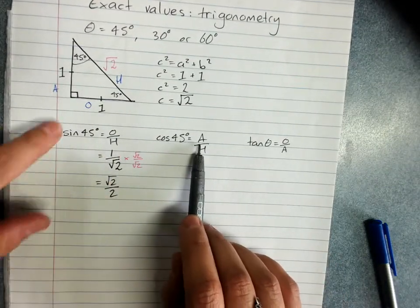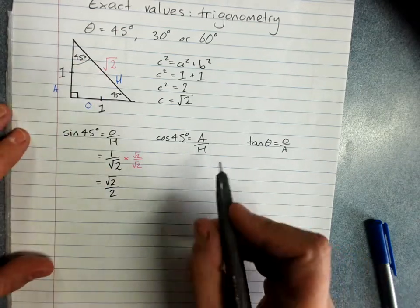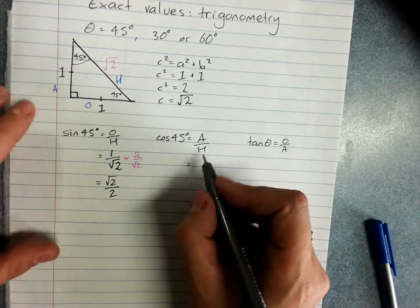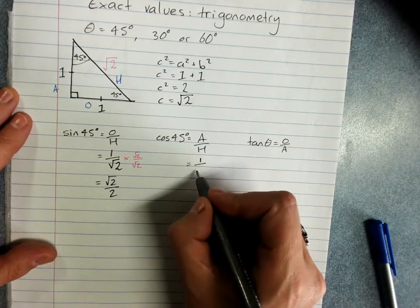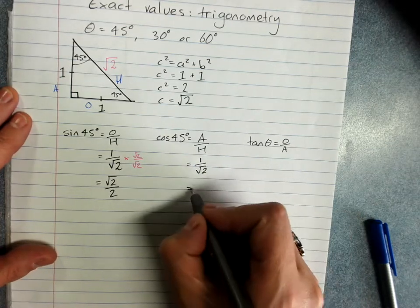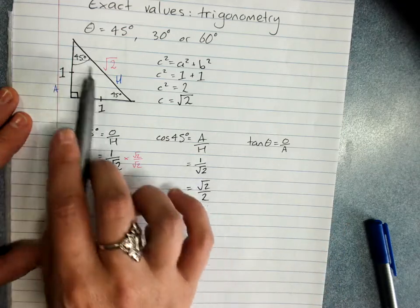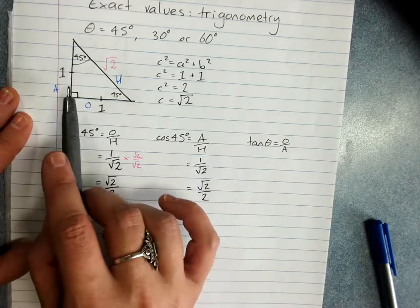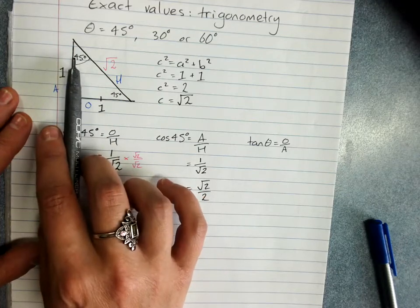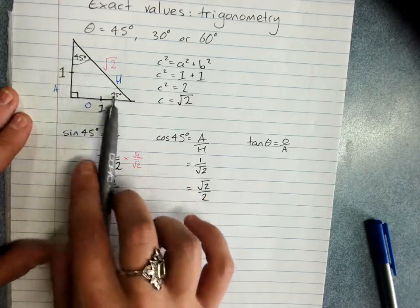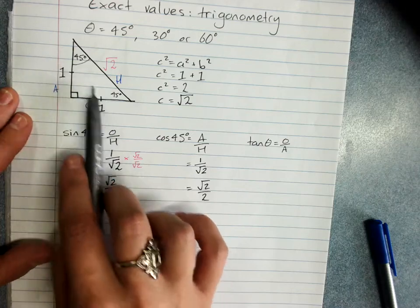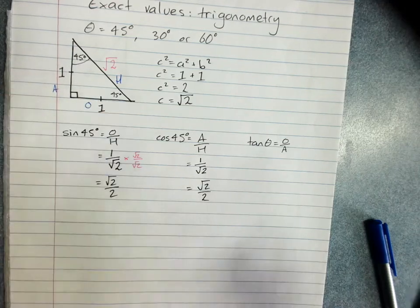So you can work out sine of 45 degrees just from that triangle. Cos of 45 degrees, adjacent over hypotenuse - that's going to be the same thing because our opposite and adjacent are the same. That's 1 over root 2, so that's also root 2 on 2.